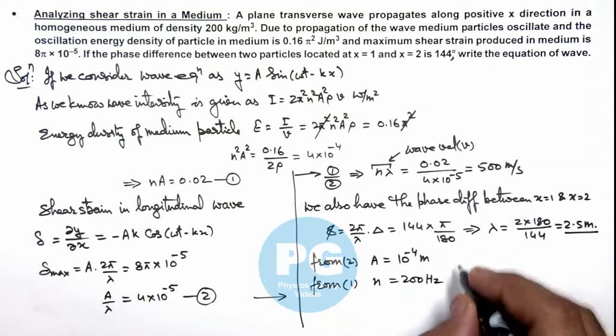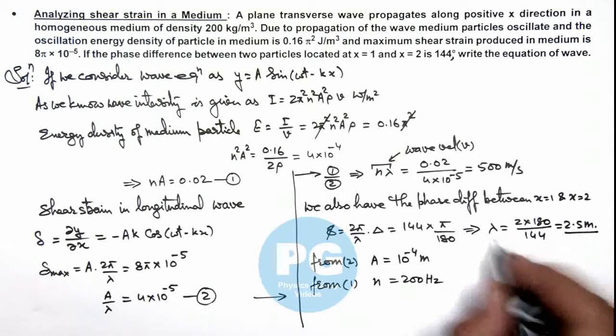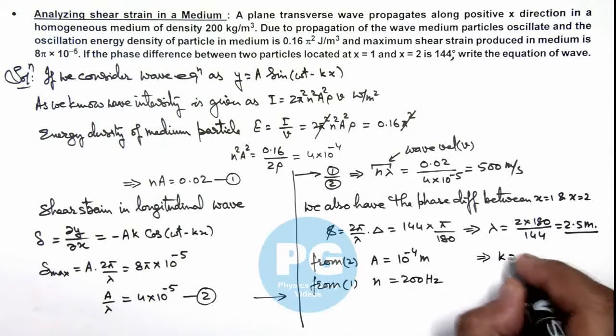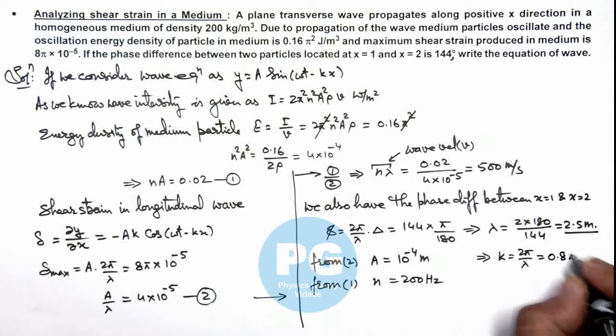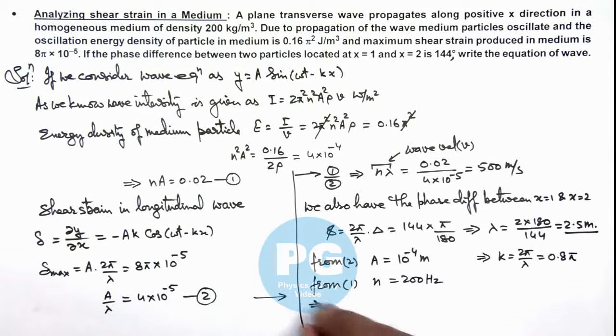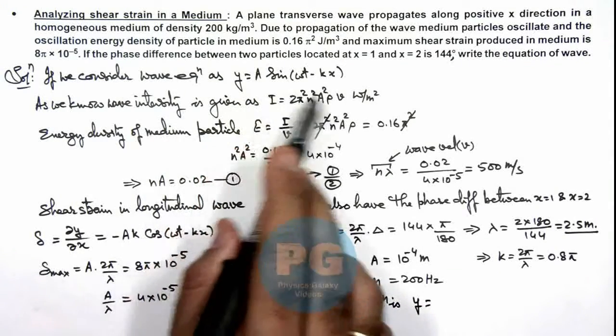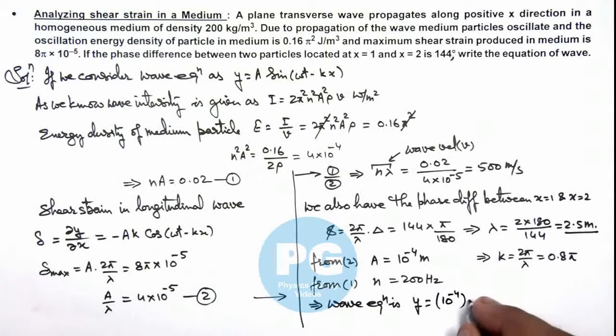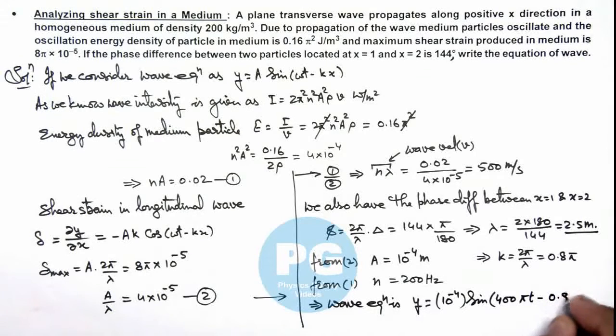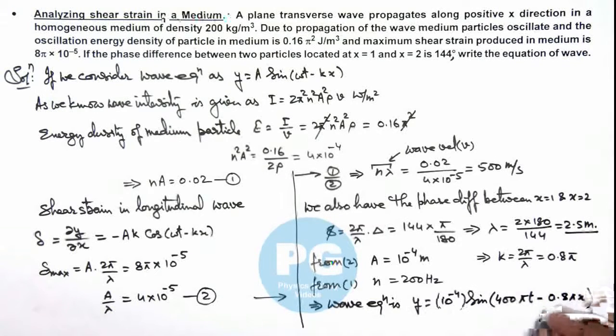And from here, as we are already having the value of lambda, this implies value of k is 2π/λ, and that is equal to 0.8π. So this implies the wave equation is: we can write directly the wave equation as ay sin(ωt - kx). So this is 10^-4 multiplied by sin of 400πt minus 0.8πx. That is the result of this problem.